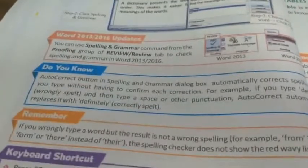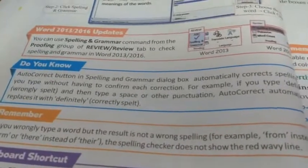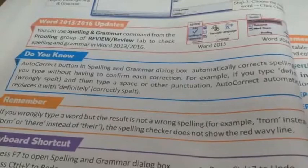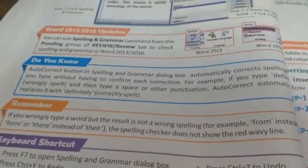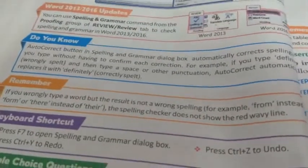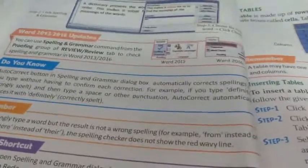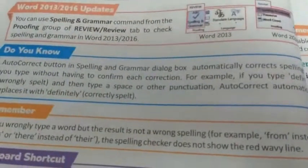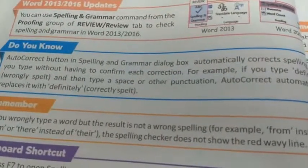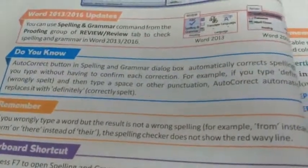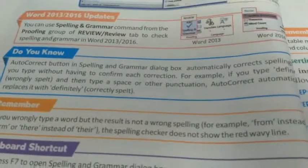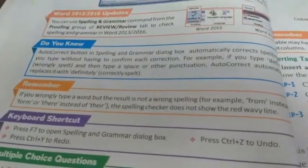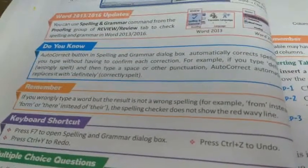The Autocorrect button in the Spelling and Grammar dialog box automatically corrects the spelling you type without having to confirm each correction. For example, if you type 'definitely' with wrong spelling, then type a space or other punctuation, autocorrect automatically replaces it with the correct spelling of 'definitely'.